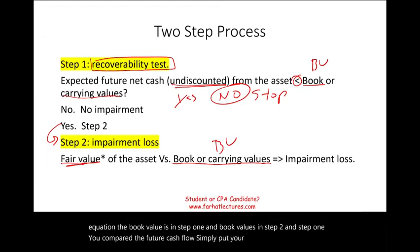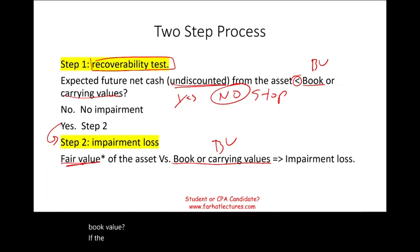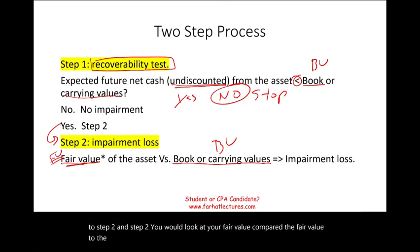In step one, you ask: can I generate enough raw, undiscounted cash to recover my book value? If the answer is no, you could possibly have an impairment and go to step two. In step two, you compare the fair value to the book value, and the difference is your impairment loss.